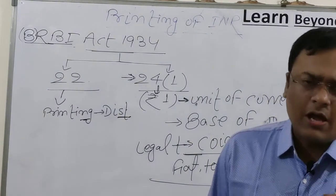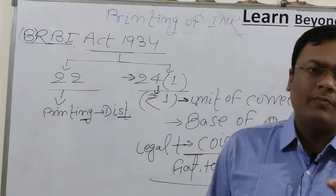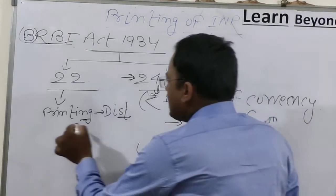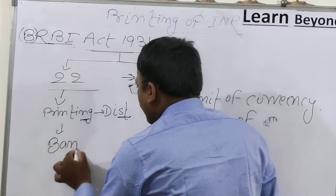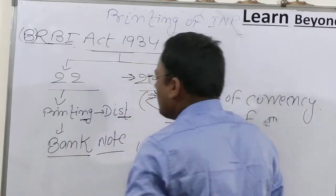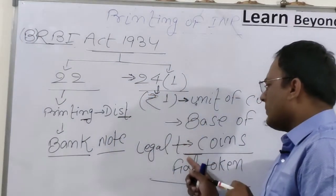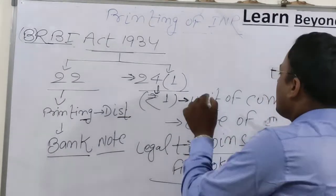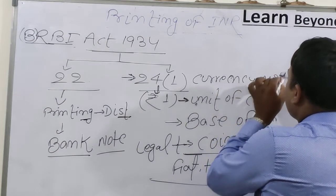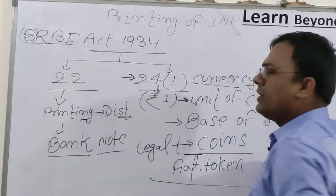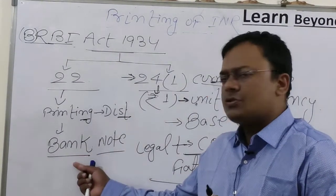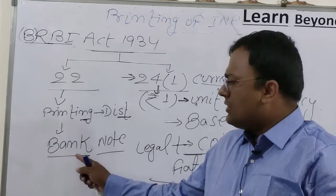All paper notes — whether 2 rupees or 2000 rupees — are considered bank notes. But the one rupee note is the base of currency and is a currency note. So the distinction is: currency note refers only to the one rupee note, while except the one rupee note, all other denominations of Indian currency are known as bank notes.